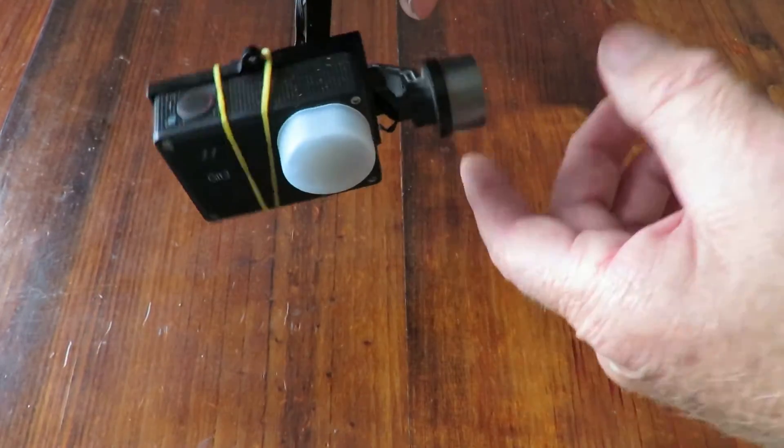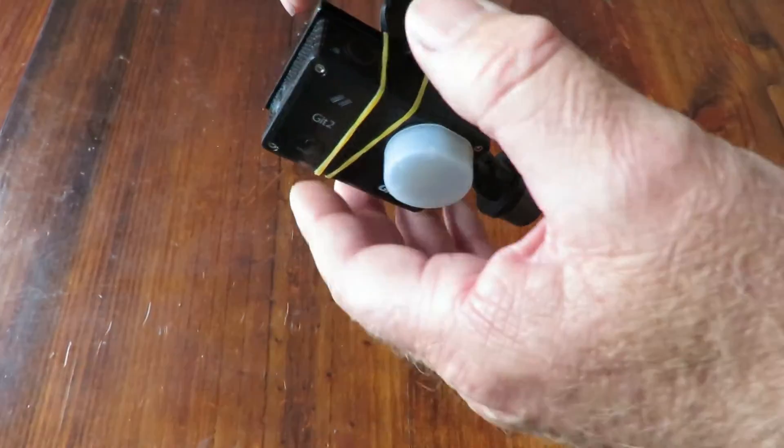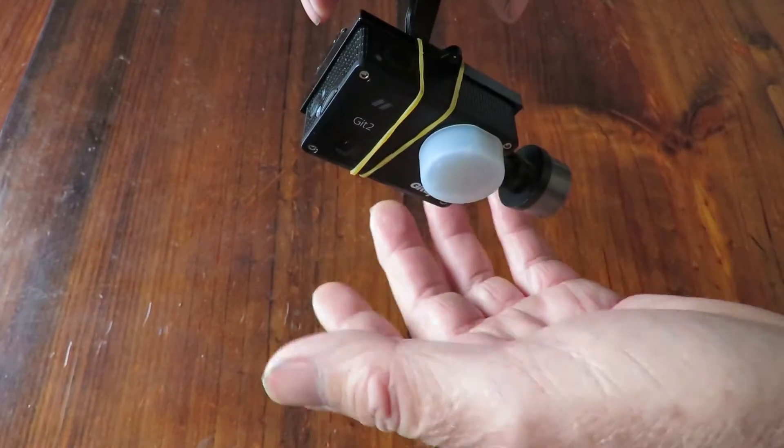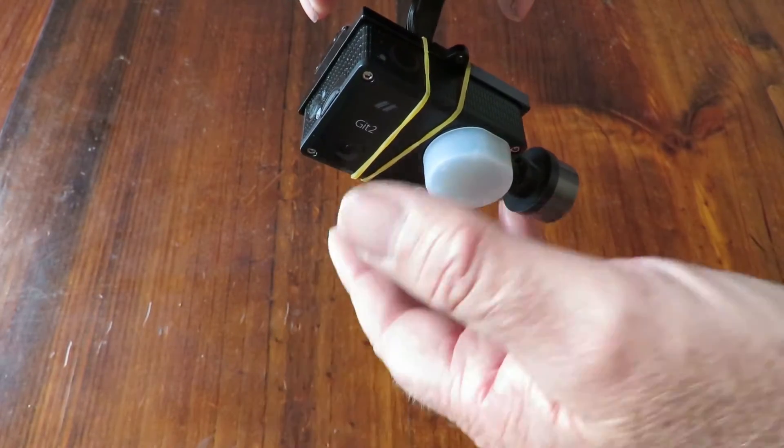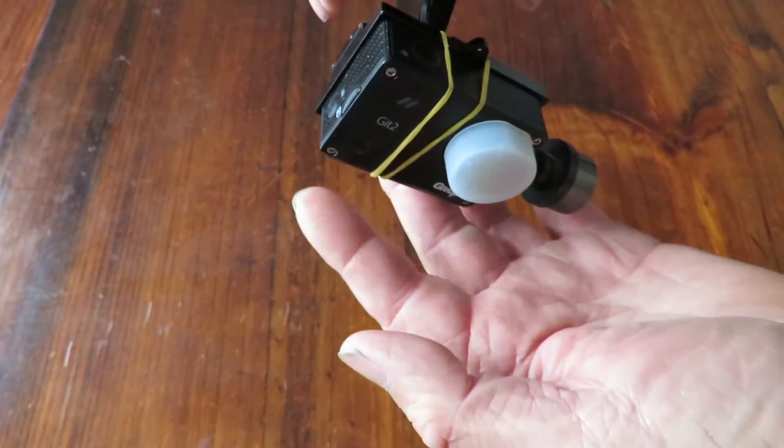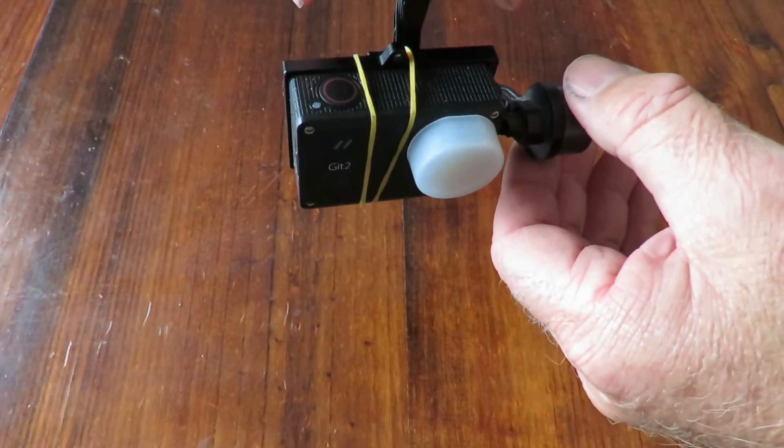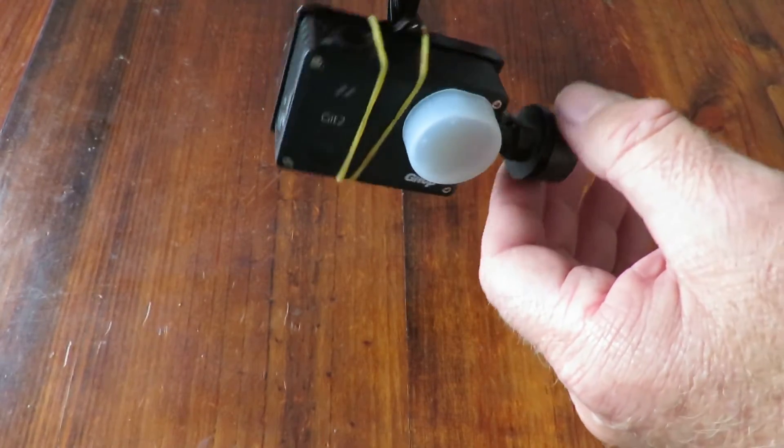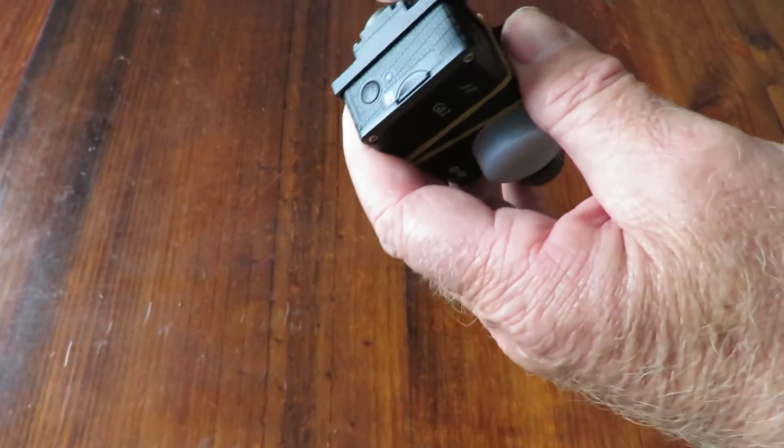With this one, you've got two solutions. One, you could put a counterbalance on the bottom to bring it back up, but I really don't want to add any extra weight to the gimbal, so my thought is this little plate at the back here.